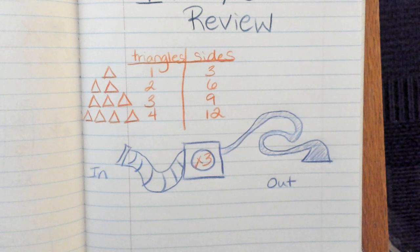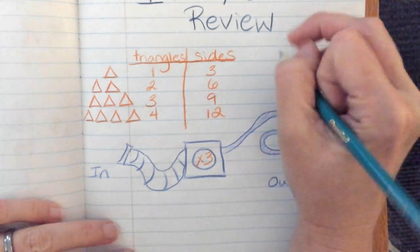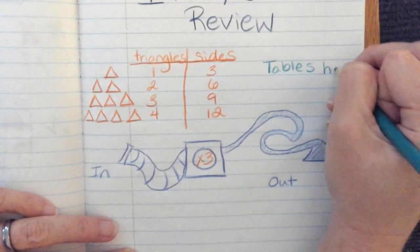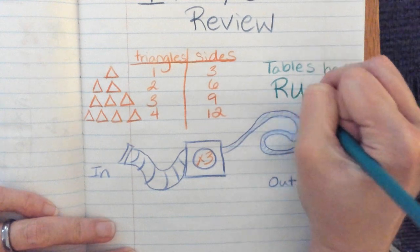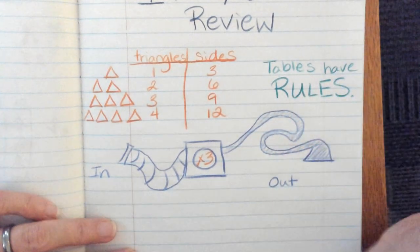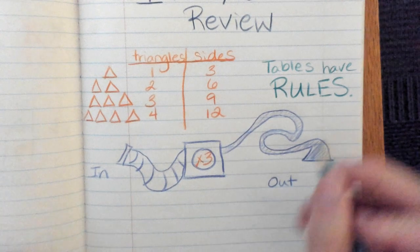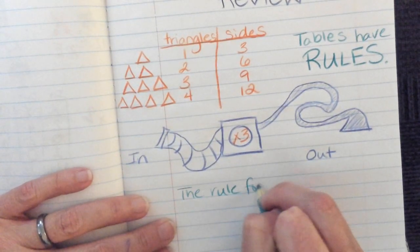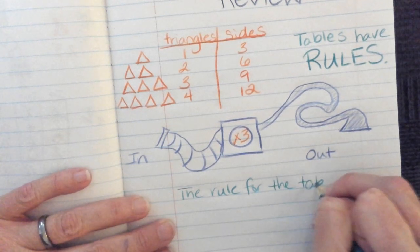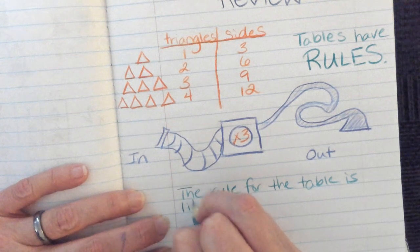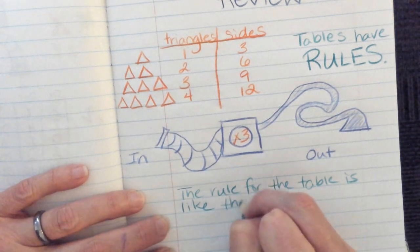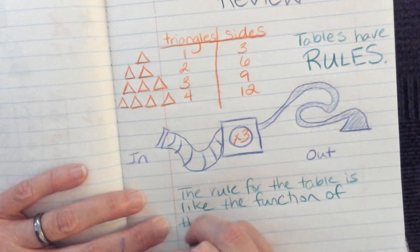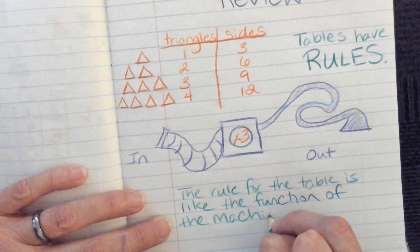And so the thing that we notice is that tables have rules. Tables have rules. And then the rule for the table, the rule for the table is like the function, or what the machine does, the function of the machine.